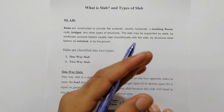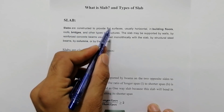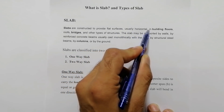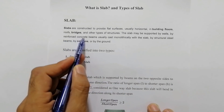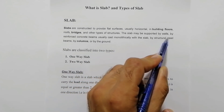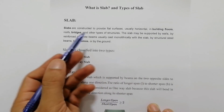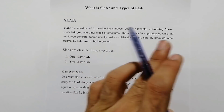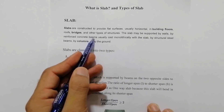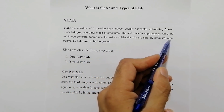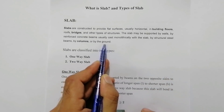First of all I will tell you what is RCC slab. In civil engineering, slabs are constructed to provide a flat surface, usually horizontal, in building floors, roofs, bridges, and other types of structures. The slab may be supported by walls, by reinforced concrete beams usually cast monolithically with the slab, by structural steel beams, by columns, or by the ground.